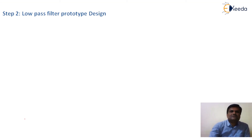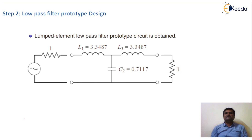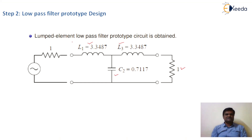In step 2, we design the low-pass filter prototype using lumped components. For n equal to 3, it requires 3 reactive components: first is inductor L1, second is capacitor C2, and the third lumped component is an inductor with value 3.3487. This is the low-pass filter prototype design using lumped components.